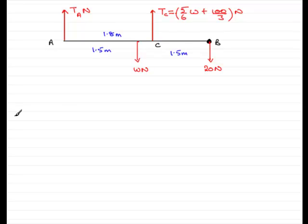Now in this part, what I've done first of all is I've updated the tension in the rope acting at C with the answer we found in the first part. That tension was 5/6w plus 100 over 3 newtons.